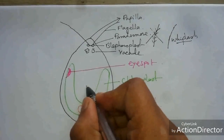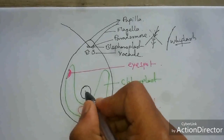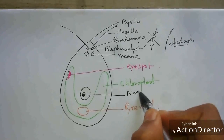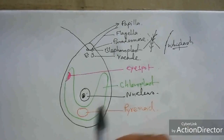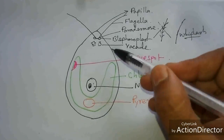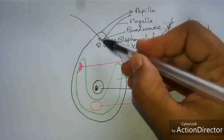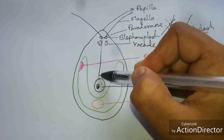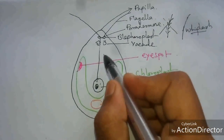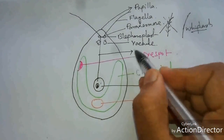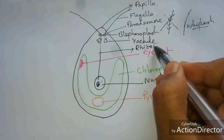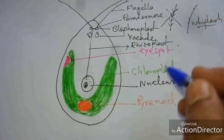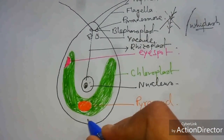This is the nucleus. From the blepharoplast, a fiber is attached to the nucleus; that fiber is called the rhizoplast.